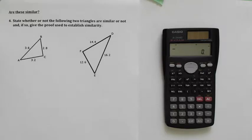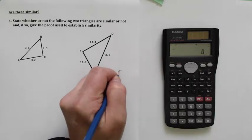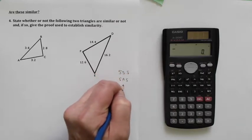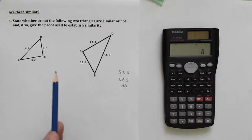Well, we have to think about what those proofs are. We've got the side-side-side proof, we've got the side-angle-side proof, and we've got the angle-angle proof. These are the only three ways we can prove if two triangles are similar or proportional.